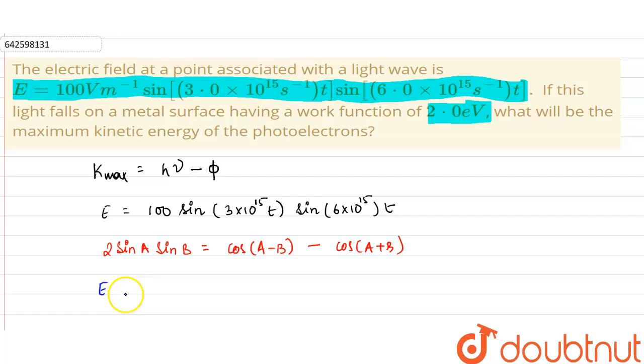our expression for the electric field at a point associated with the light wave will become 100 upon 2 into cos of 9 into 10 raised by 15 t minus cos of 3 into 10 raised by 15 t.